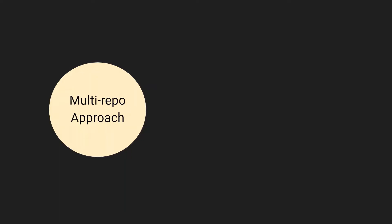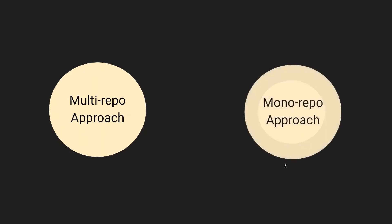Before we start the setup, let's understand a little bit about what mono and multi repo are, and how they differ in terms of packages and project structure. A multi repo means for each package you have a separate repository, and it has its own node_modules and package.json file — everything belongs only to that package, with no sharing of dependencies.